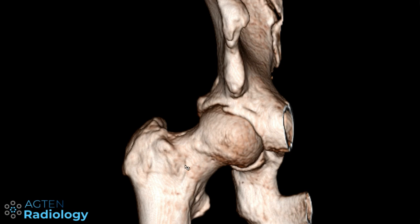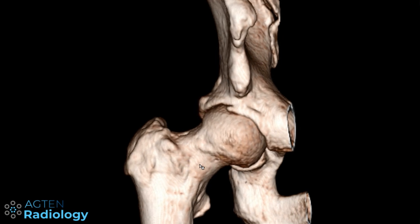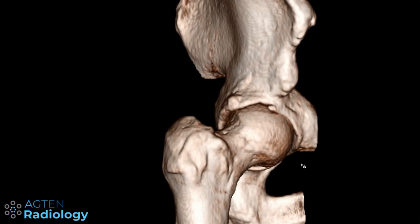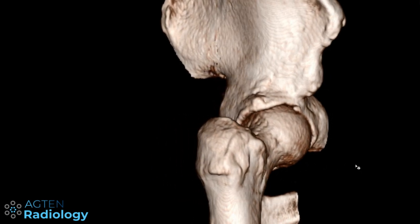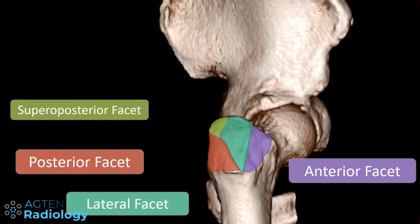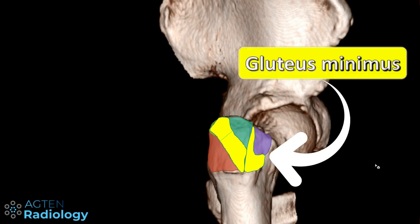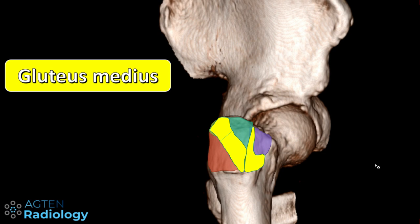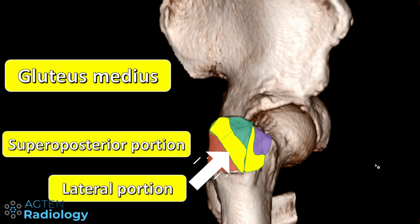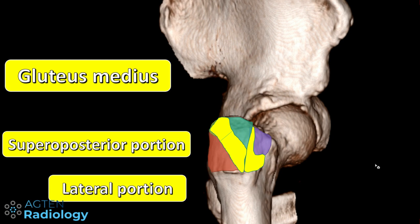Now we have the anterior facet presenting the lateral facet and parts of the posterior and supraposterior facet in the corresponding colors. Here we have the boomerang-shaped insertion of the gluteus minimus, and then the two insertions of the gluteus medius tendon — the lateral portion and the supraposterior portion. The supraposterior portion inserts onto the supraposterior facet while the lateral portion inserts onto the lateral facet.